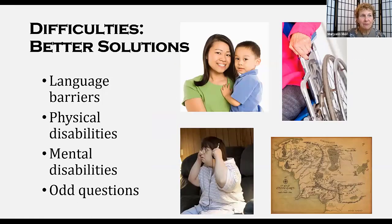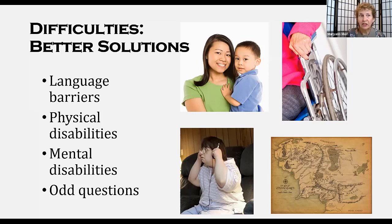Here are some situations that may prove to be difficulties for you at your library, along with better solutions. For language barriers — if you have people with speech difficulties, English language learners, or patrons with an unfamiliar accent — speak slowly, use basic words and sentences, avoid colloquialisms and clichés, accompany your comments with hand gestures, write your words as well as speak them, apologize that you are having difficulty understanding, and go get a coworker to assist.